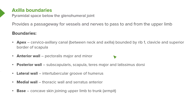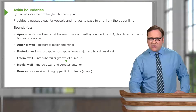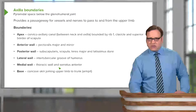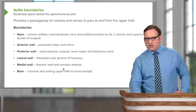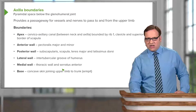The anterior wall is formed by both pectoralis major and minor, as they run from the chest wall to the humerus and the scapula. The posterior wall is formed by subscapularis muscle, the scapula bone, teres major, and latissimus dorsi muscle. The lateral wall is formed by the intertubercular groove of the humerus, and the medial wall is formed by the thoracic wall and serratus anterior muscles on its lateral aspect.